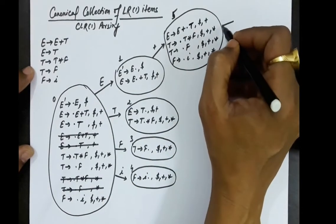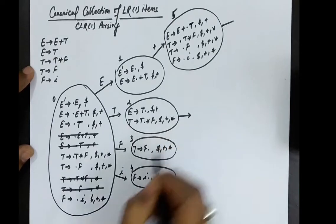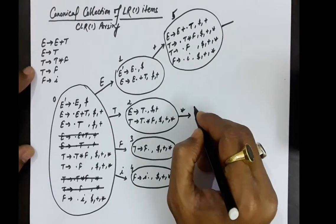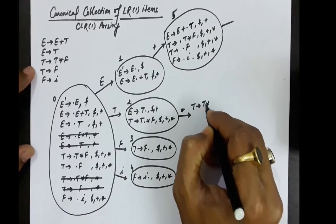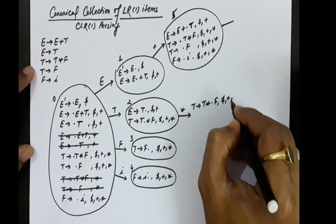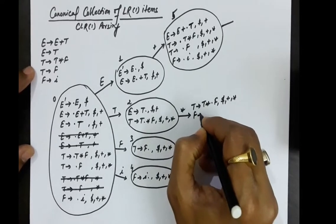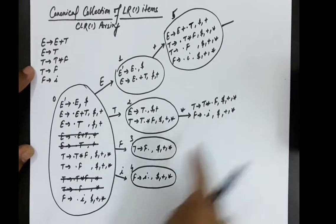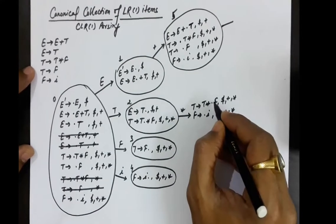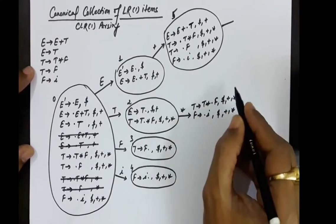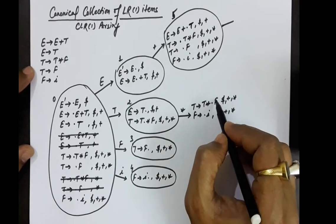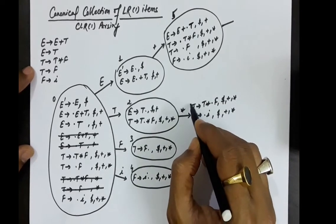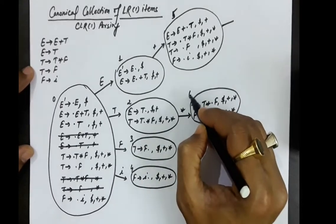Taking star from state 2: T produces T star dot F with lookahead dollar, plus, and multiplication sign. Then all productions starting with F with the same lookahead: dollar, plus, and multiplication sign. No further transitions are possible from state 3 or state 4. This is state number 6.